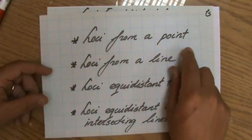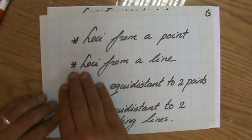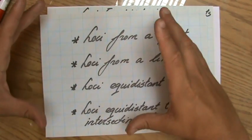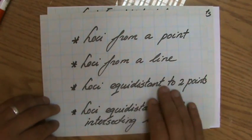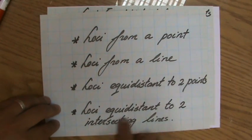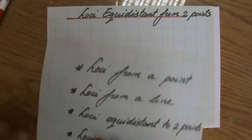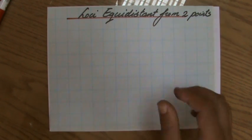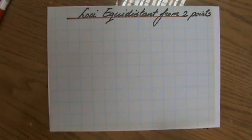We have done loci from a point where we use our compass, loci from a line in my previous video where we constructed parallel lines, and now loci equidistant to two points. And after this video, equidistant to two intersecting lines. My site, ExplainingMaths.com, has all these videos nicely organized for you, together with all my other resources, so make sure to check it.